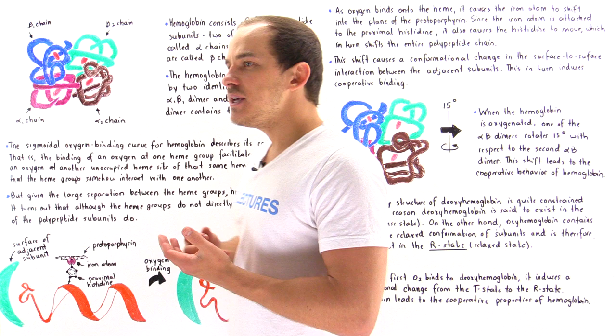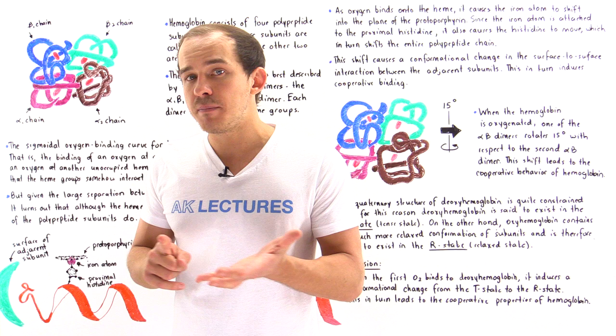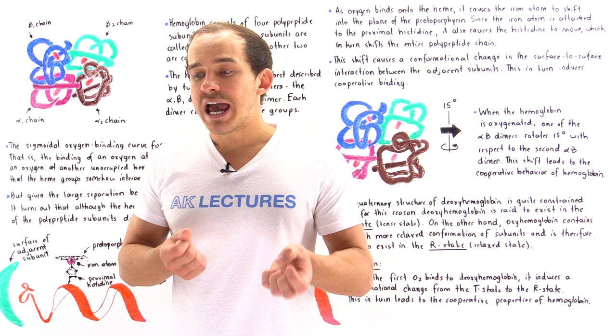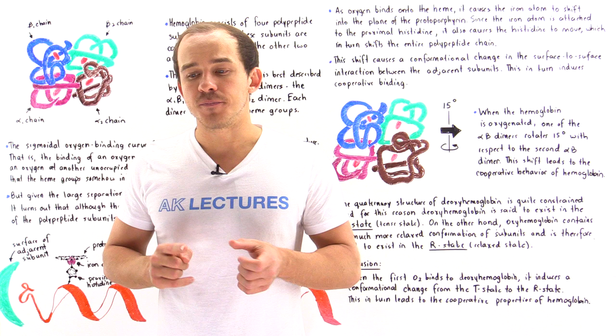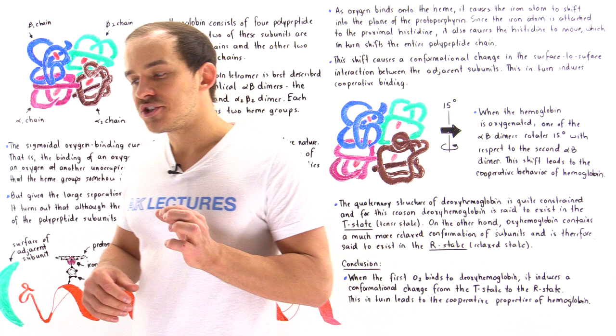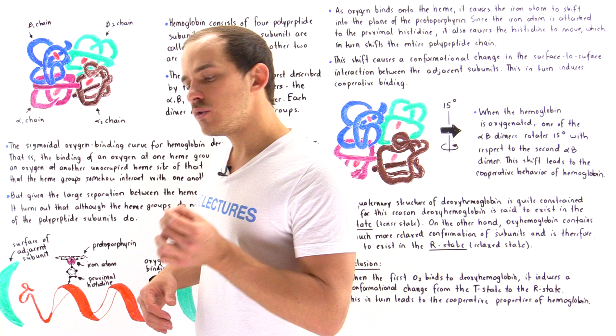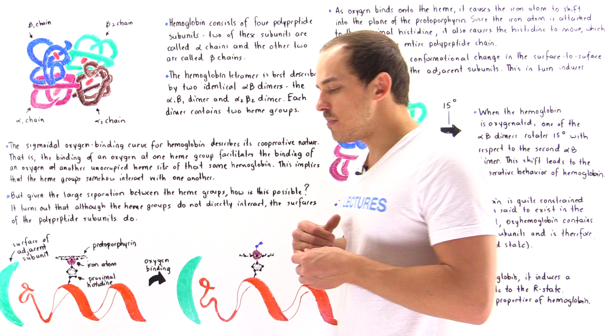Recalling what we learned previously: the oxygen binding curve for hemoglobin is sigmoidal, which implies that hemoglobin behaves in a cooperative fashion. The different heme groups actually interact with one another — as one heme group becomes occupied with oxygen, it causes the other heme groups to increase their affinity for oxygen. Likewise, when one heme group releases oxygen, the other occupied heme groups become much more likely to unload and release their oxygen.